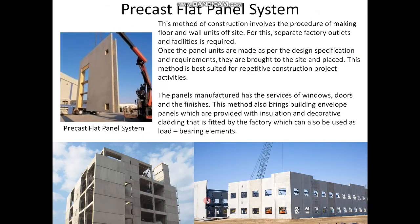The first method is the precast flat panel system. This method involves the procedure of making floor and wall units off-site, requiring separate factory outlets and facilities. Once the panel units are made as per the design specifications and requirements, they are brought to the site and placed. This method is best suited for repetitive construction project activities. In this picture, you can see the units are made off-site and brought to the site and placed, and once all the building units are fitted together, this is how it looks.